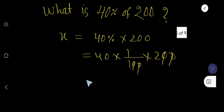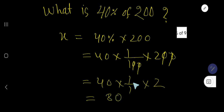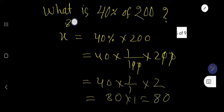Canceling the zeros, we get 40 × 1/1 × 2, which is 40 × 2 = 80. So 80 is 40% of 200.